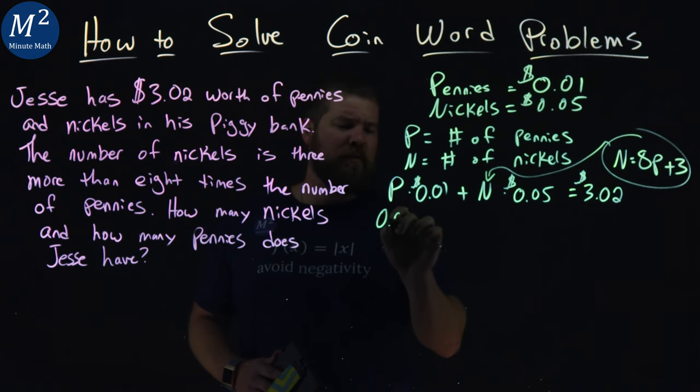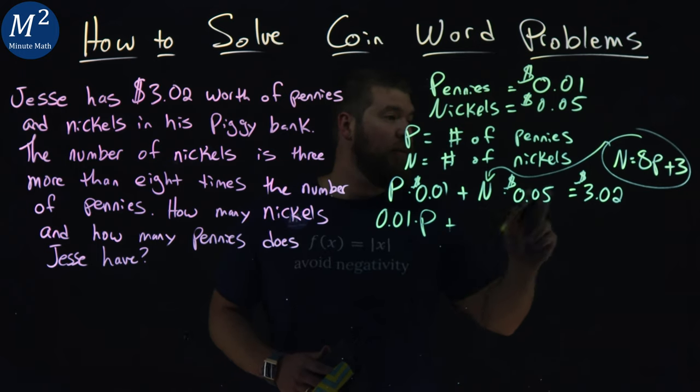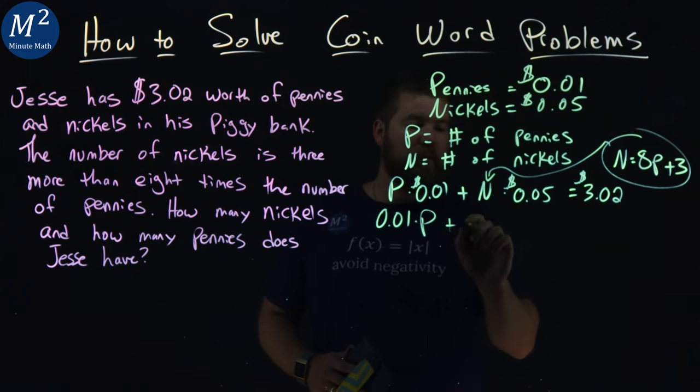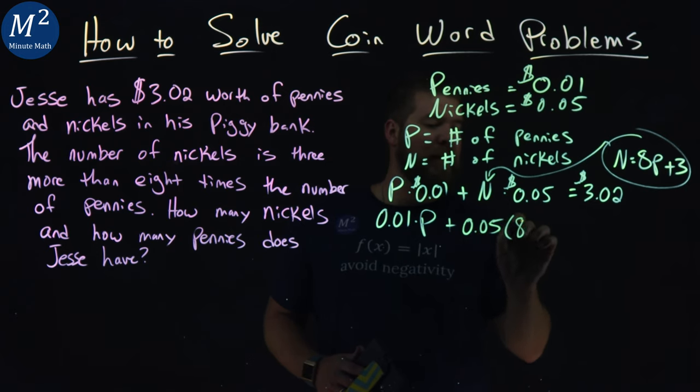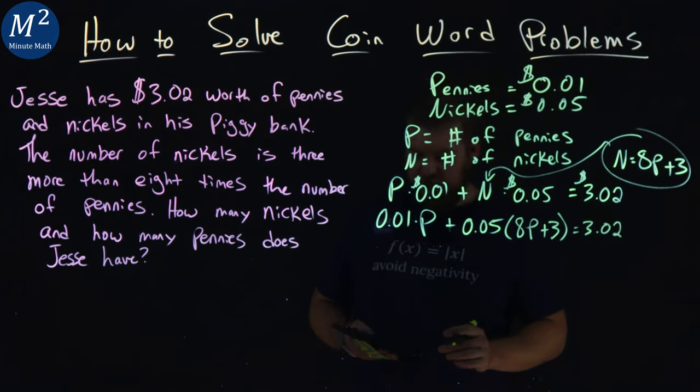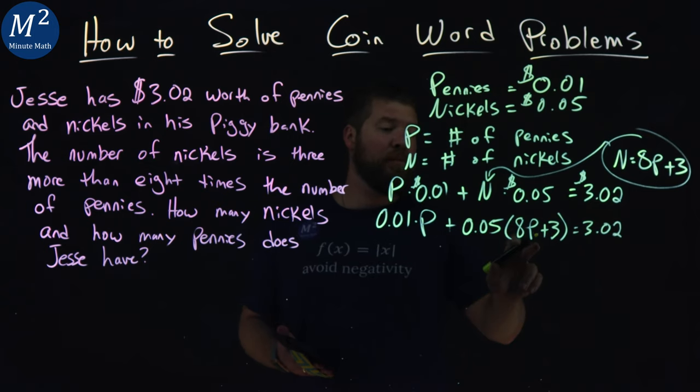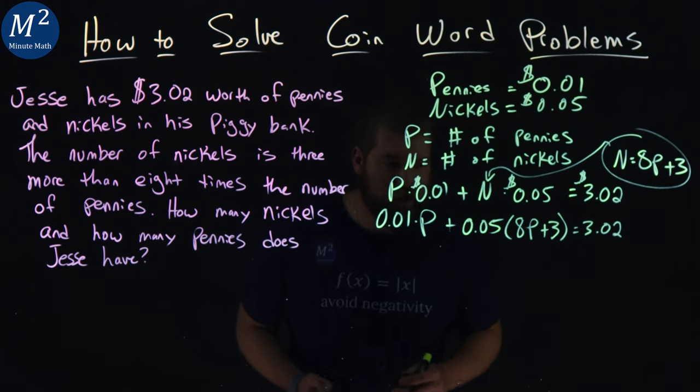Let's put the coefficient out front: 0.01 times p, plus instead of n we have 0.05 times (8p plus 3), which equals 3.02. Now we have one variable, p, an equation we can solve.